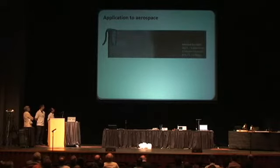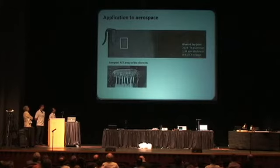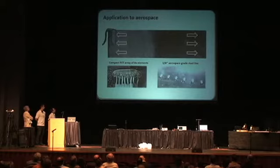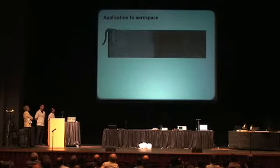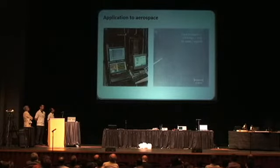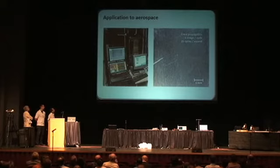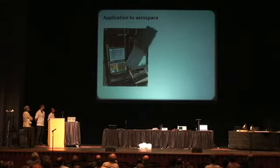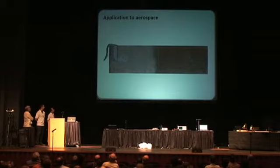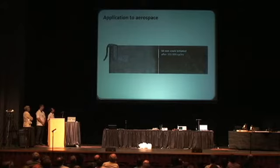We manufactured a riveted lap joint made of aerospace-grade aluminum. On this lap joint, we bonded a compact PZT array of eight elements. We then cycled this structure using a sinusoidal load in a test machine, with the goal of propagating a crack and monitoring it as it propagates. What you see here is the propagation of the crack accelerated 25 times. At regular intervals, the piezo-ceramic array was used to generate and receive propagated waves in the structure, and we were able to monitor crack propagation up to complete failure.